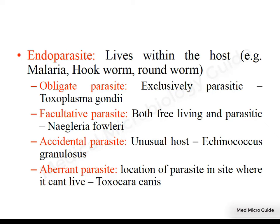An aberrant parasite is one which locates in a site where it cannot live. Usually this is a parasite of animals; if it infects a human being, it wanders here and there causing larva migrans.